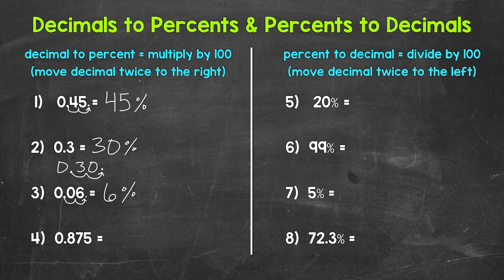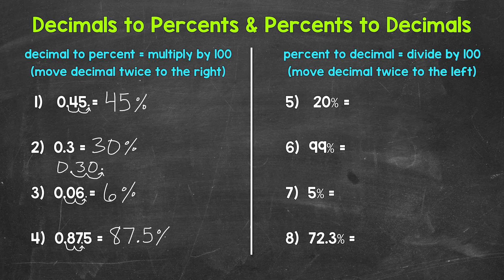Moving on to number four, we have 0.875 — 875 thousandths. Let's multiply by 100 to convert this to a percent by moving the decimal twice to the right. It's going to go in between the seven and the five, so we end up with 87.5%. That's how we go from decimals to percents — we multiply by 100 by moving the decimal twice to the right.